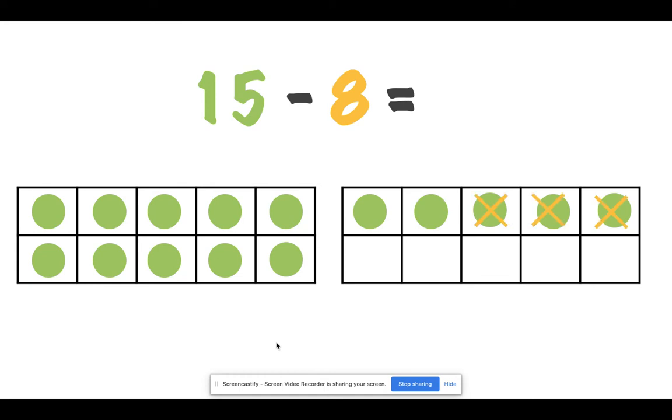1, 2, 3, 4, 5, 6, 7, 8. What's your difference? You are so smart. Good job. 15 minus 8 equals 7.